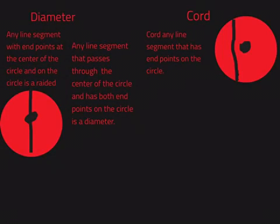Any line segment with endpoints at the center of the circle and on the circle is a radius. Any line segment that passes through the center of the circle and has both endpoints on the circle is a diameter.